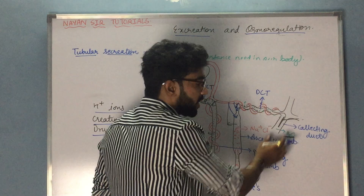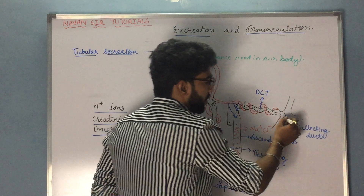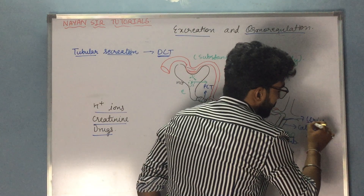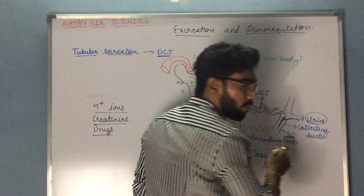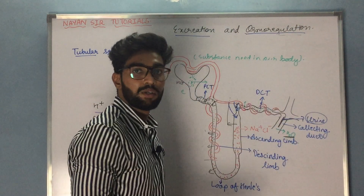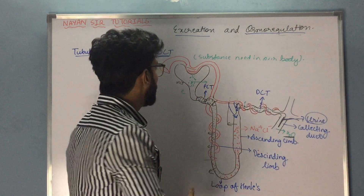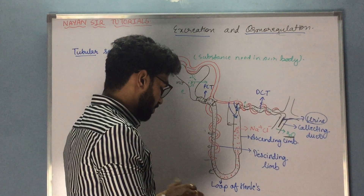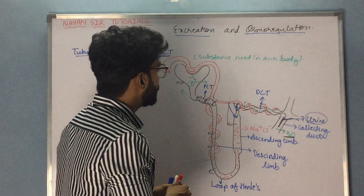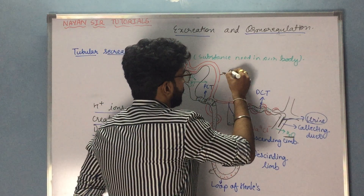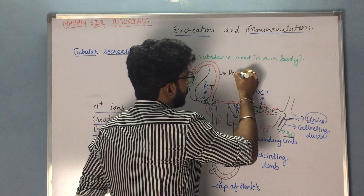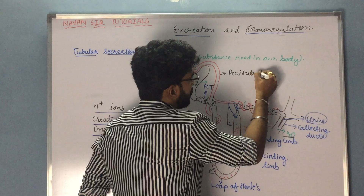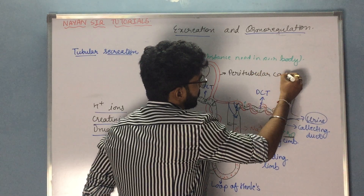Once inside the nephron, these substances mix with the filtrate which has been formed, and they are passed to the collecting duct. In the collecting duct, urine is formed and then that urine is excreted out from the body. This is how tubular secretion takes place with the help of the capillaries known as peritubular capillaries.